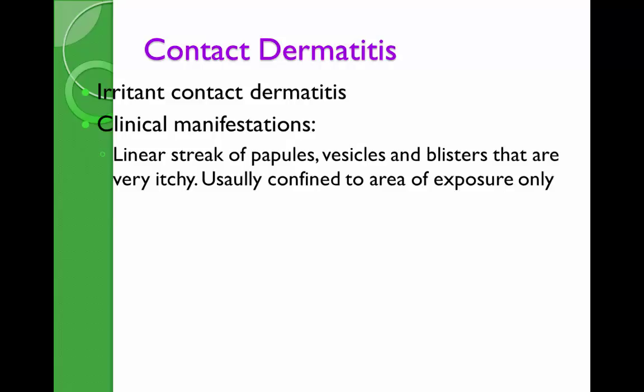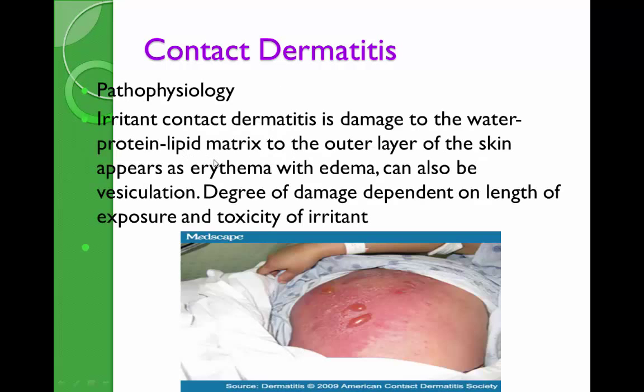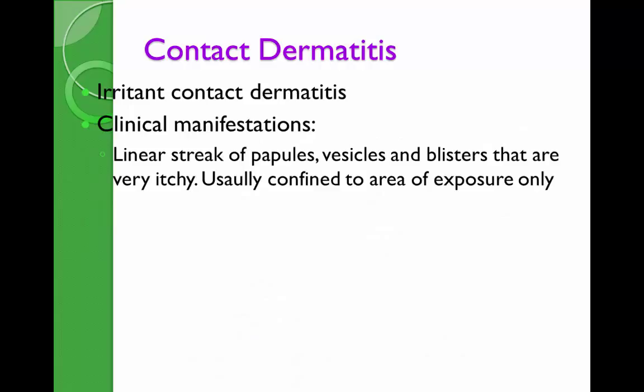The clinical manifestations — due to damage to the keratinocytes from the inflammatory reaction of the lipid bilayer — include papules, vesicles, and blisters. It is usually confined to the area of exposure to the allergen. You can trace what was there before: if it was a dressing, you can see the tape's form — whether it was square or rectangular.